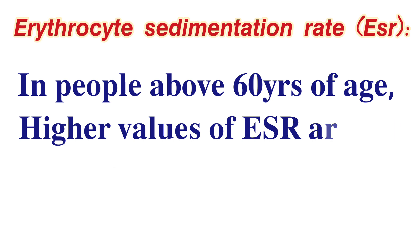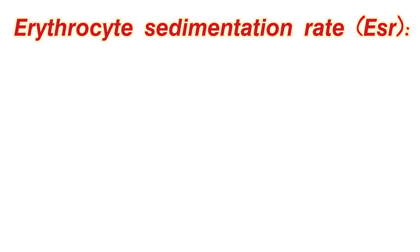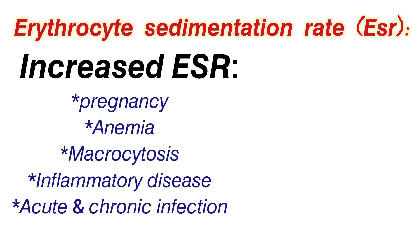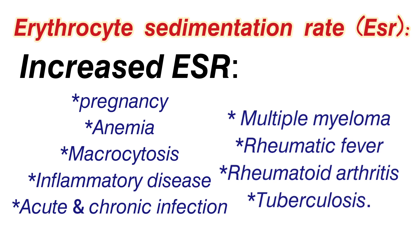Now let's talk about conditions that increase or decrease ESR. Conditions that increase ESR include: pregnancy, anemia, macrocytosis, inflammatory disease, acute and chronic infection, multiple myeloma, rheumatic fever, rheumatoid arthritis, and tuberculosis.